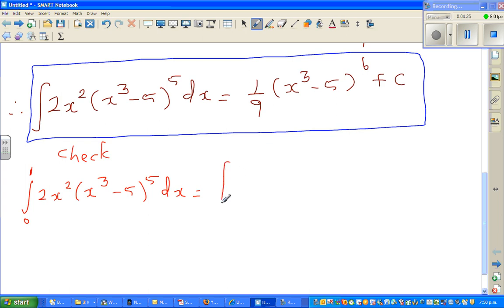This is nothing but definite integration, or definite integration would be 1/9th of (x cubed minus 5) to the power 6 between 0 and 1. Because C doesn't come when you do the definite integration. So I'm going to put 1 and then take away 0. So this is nothing but 1/9th. If you put 1, 1 cubed is 1, so this is minus 5 to the power 6.